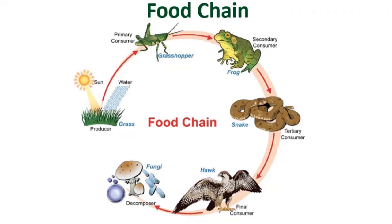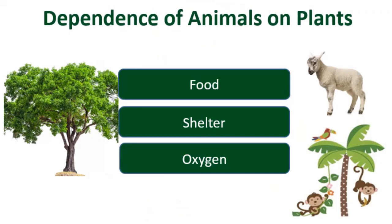Animals are dependent on plants majorly for food. How else are animals dependent on plants? Animals depend on plants for shelter — many birds make nests on trees and animals like monkeys live on trees. And lastly, for oxygen. Oxygen is the gas released by plants during photosynthesis, used by all living beings for breathing. So animals are dependent on plants for food, for shelter, and for oxygen.